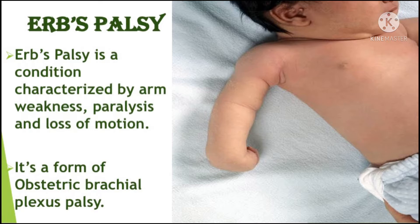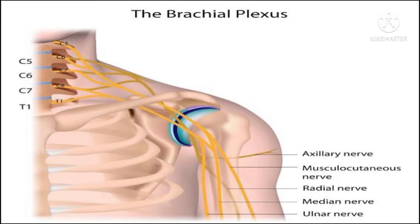It occurs when there is an injury to the upper trunk of the brachial plexus — C5 and C6. The brachial plexus is a key network of nerves located where the shoulder meets the base of the neck.